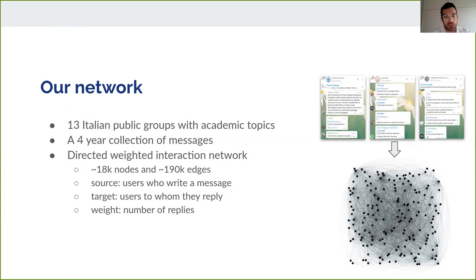We were able to get them in a complete stealth way, without even joining the groups. With these, we were able to build a directed-weighted interaction network where the interaction is represented by the reply action. We have 18,000 nodes and 190,000 edges, where the source is who writes a message and the target is the user to whom they reply. We also have a weight that corresponds to the number of replies.